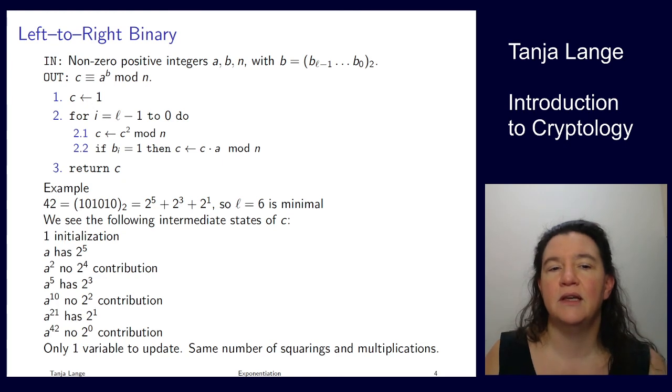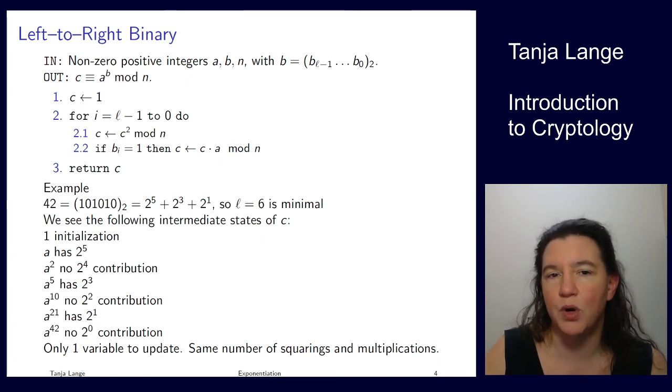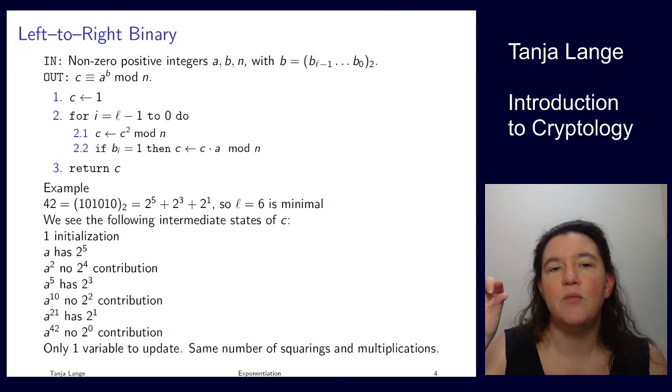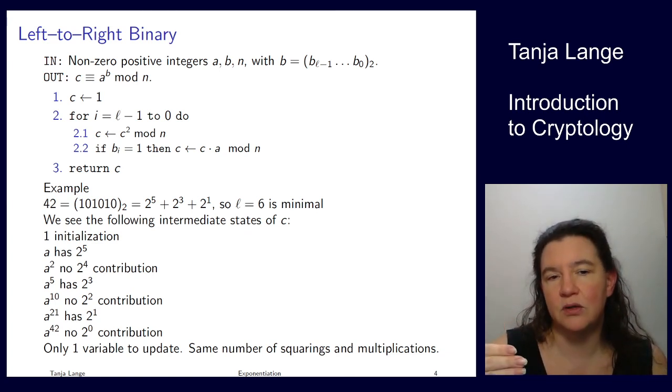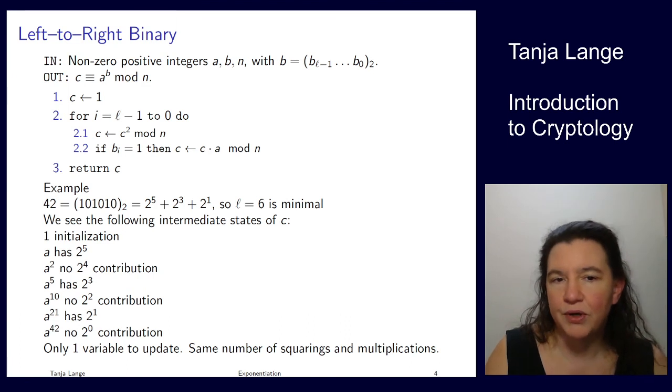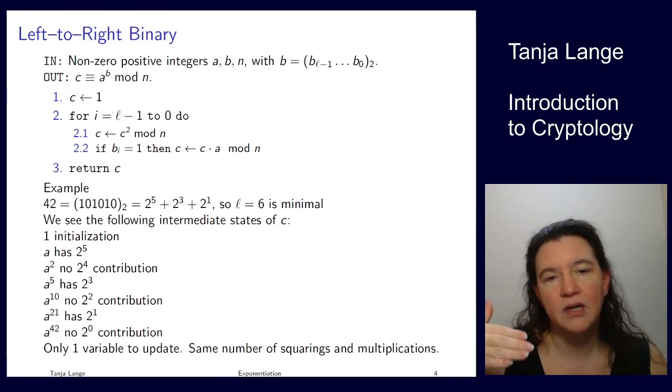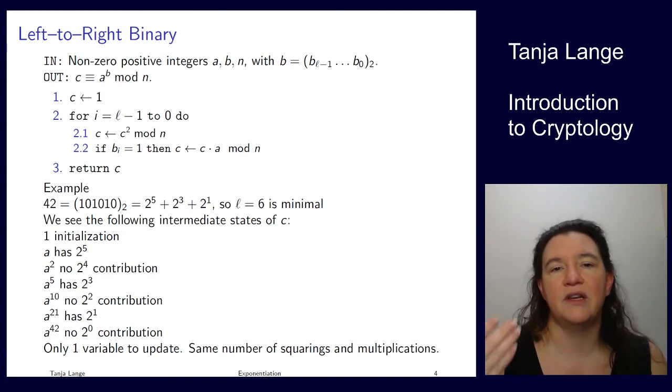So what we see here on the left is we're starting with 1. So even if the first bits are 0, we would be just keeping squaring the 1 there. And then we multiply by a. So now we have a, because there is a 2 to the 5. And then in the next step we just square it, because there is a 0 bit as the next one. So we don't multiply again, we don't see an a cubed. And then we encounter another 1 after we have squared. So then we're reaching a to the 4 times a, so that's a to the 5. And then we square again, then we encounter the next 1 bit, so we're getting to a to the 21. And then we square, reaching 42.